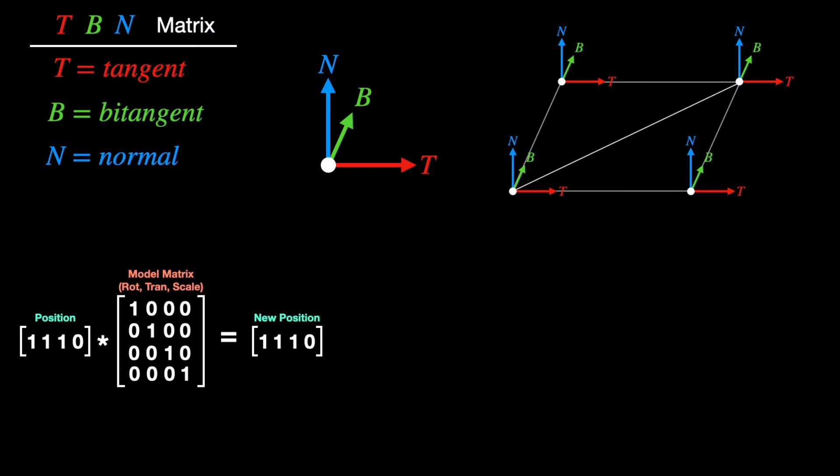And that would make it so we can multiply that position, translate it, rotate it, scale it using that matrix. Every single one of those vertices got translated, rotated, and scaled using that model matrix to our new position. We're going to use that same concept where we take the tangent space normal that we sampled from our normal map. We're going to multiply it by this TBN matrix, which is a 3 by 3 matrix, which is very easy. It's just tangent, bi-tangent, normal.